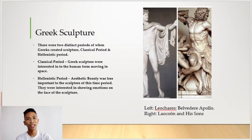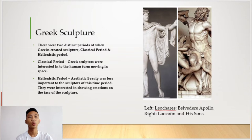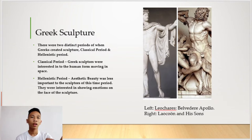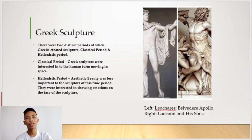In the Hellenistic period, aesthetic beauty was less important to the sculptor. They were instead interested in showing emotions on the faces of the sculptures. Unlike the Classical period's focus on moving human figures, the Hellenistic period focused on depicting the emotions on the faces of the sculptures. That concludes this part of the presentation.